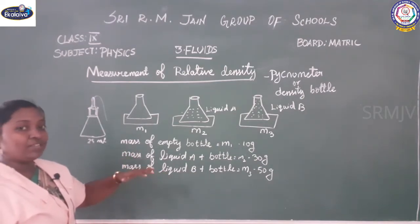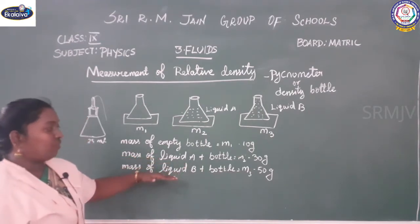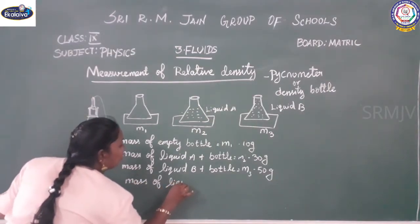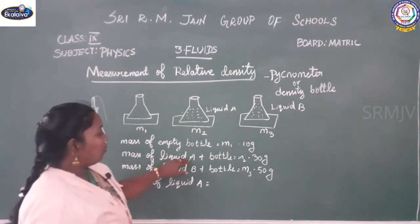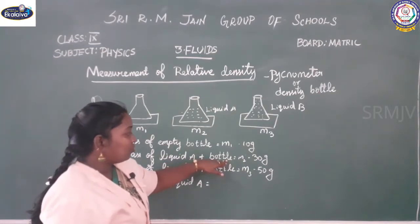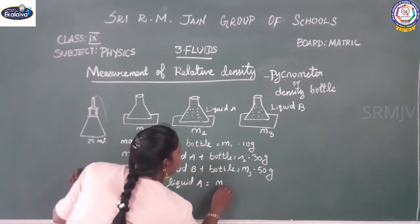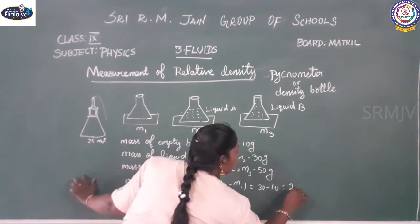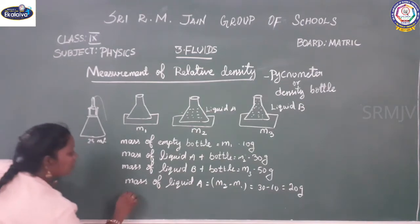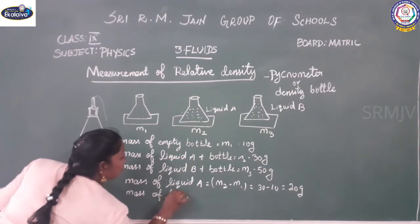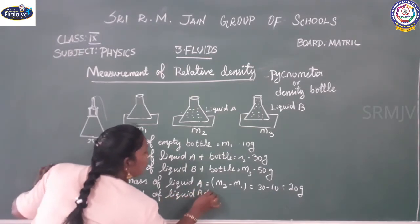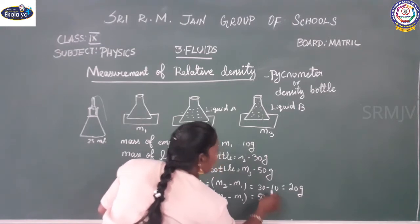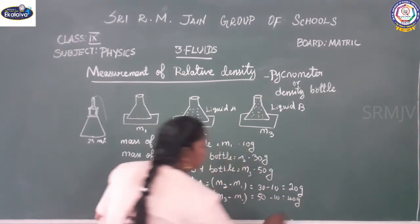We need to know only the mass of liquid A and the mass of liquid B. To get the mass of liquid A alone, we subtract the bottle mass: M2 minus M1, which is 30 minus 10, giving 20 grams. Similarly, the mass of liquid B is M3 minus M1, which is 50 minus 10, giving 40 grams.